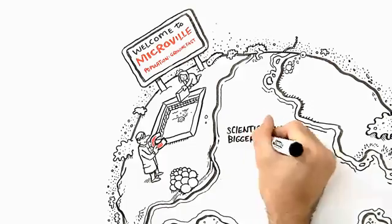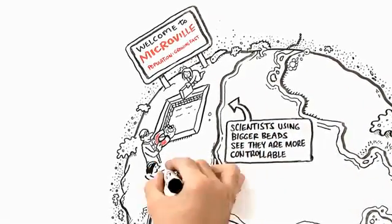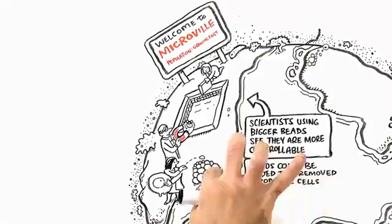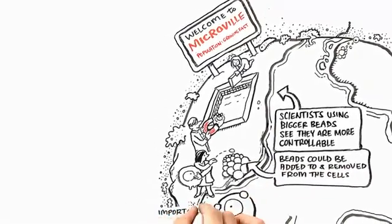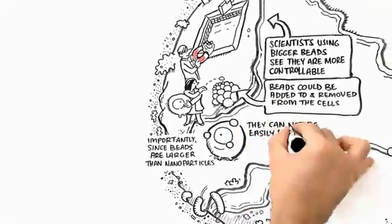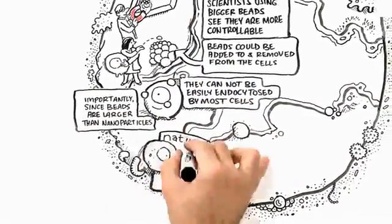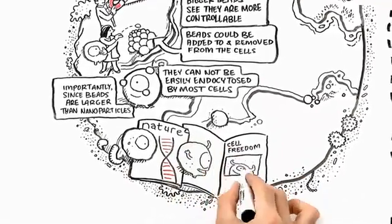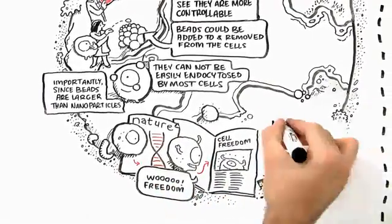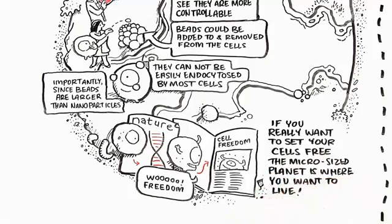Back on the micro-sized planet, scientists using bigger beads see that they are more controllable. The beads could be added to and removed from the cells. Importantly, since the beads are larger than nanoparticles, they cannot easily be endocytosed by most cells. And if you want to isolate cells that are particle or bead-free, if you really want to set your cells free, then the micro-sized planet is where you want to live.